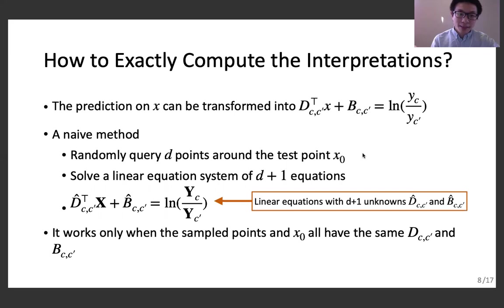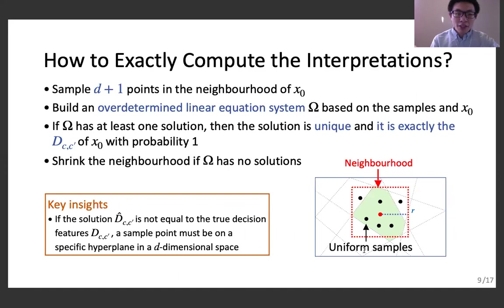However, this will only happen when the sampled points and the test point all have the same d_cc' and b_cc'. An example of such an ideal case is that all points are in the same locally linear region. However, without accessing the internal information of the remote model, we cannot guarantee that samples are in the same region. So, how can we solve this problem?